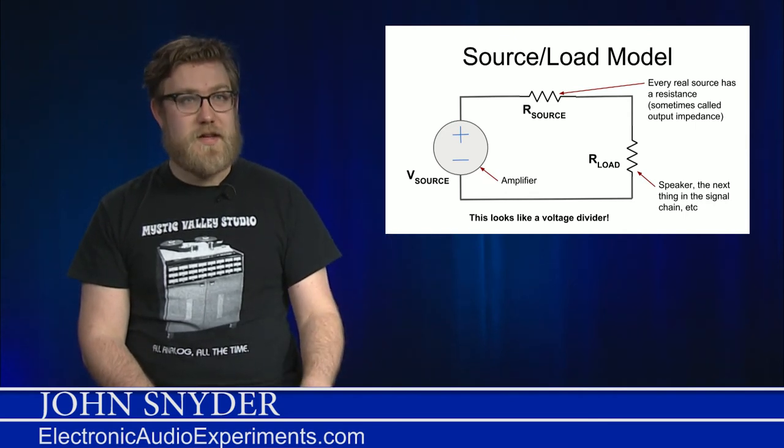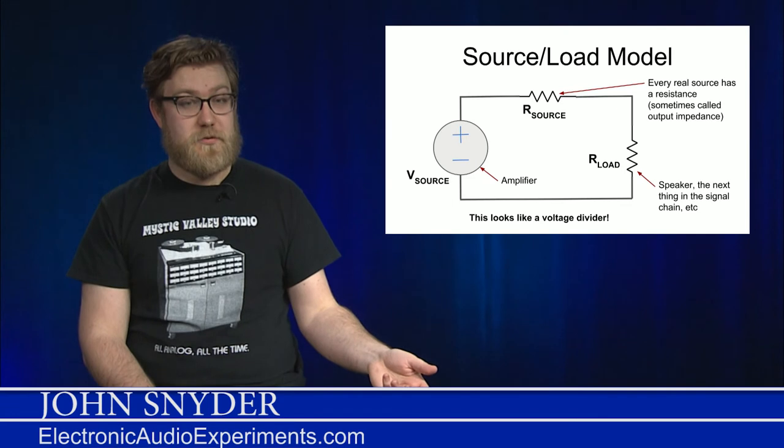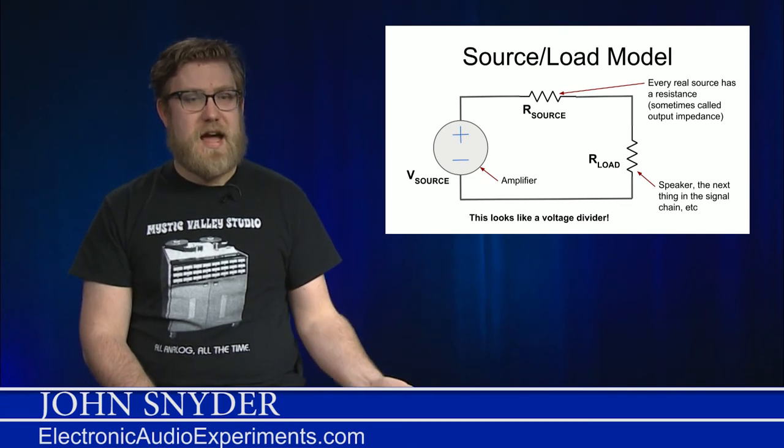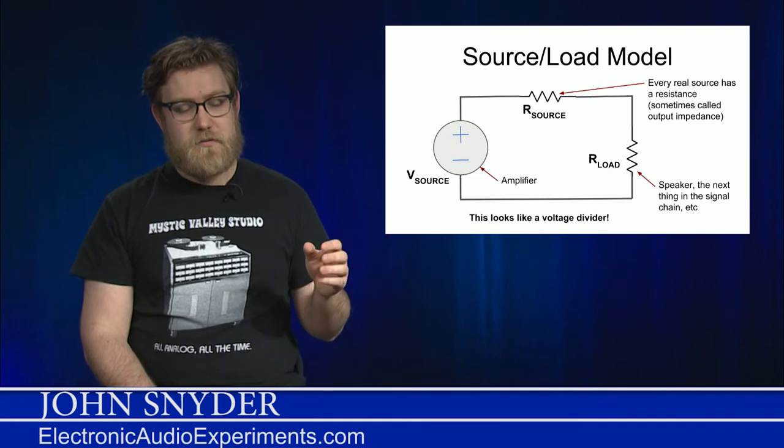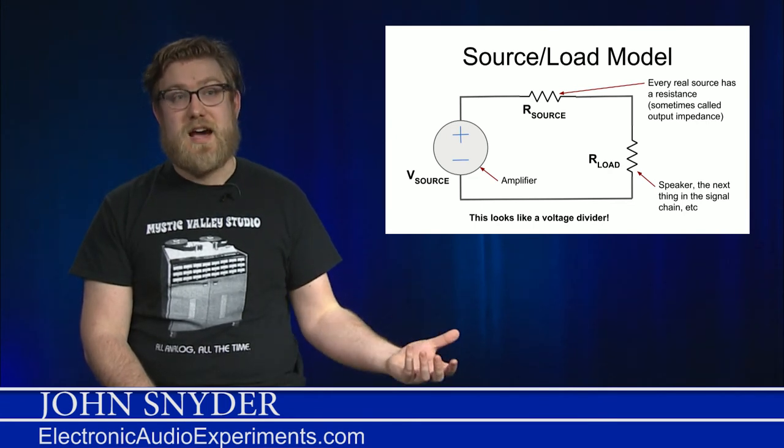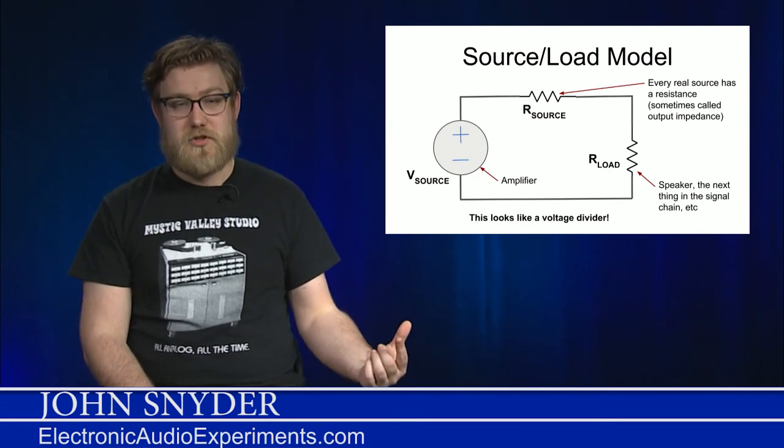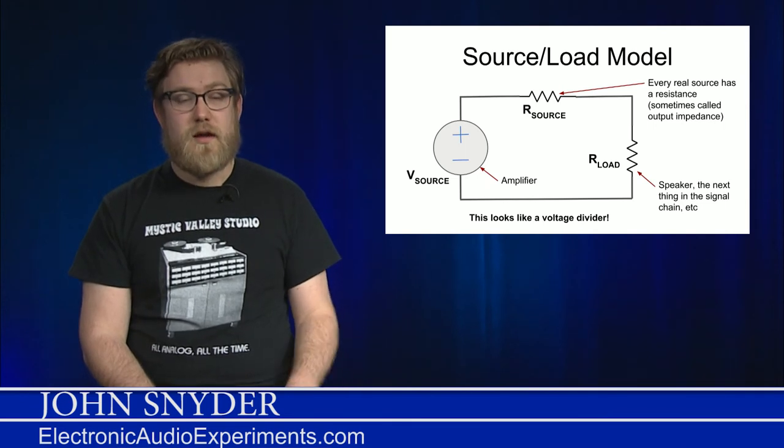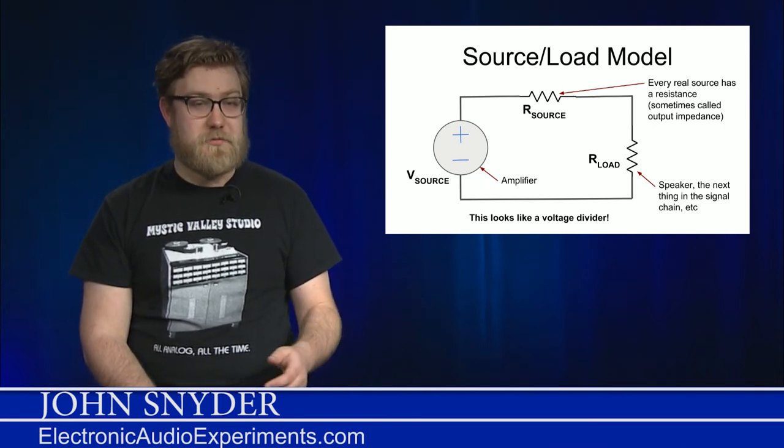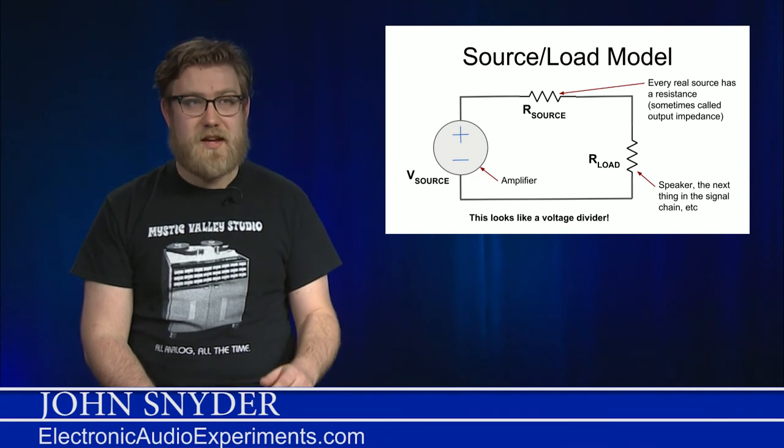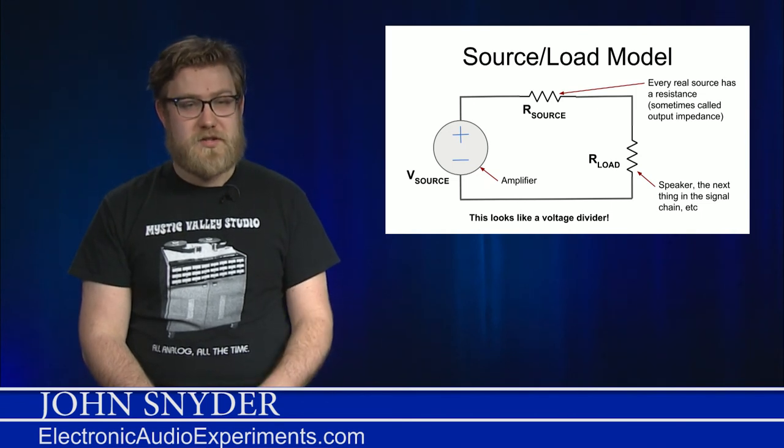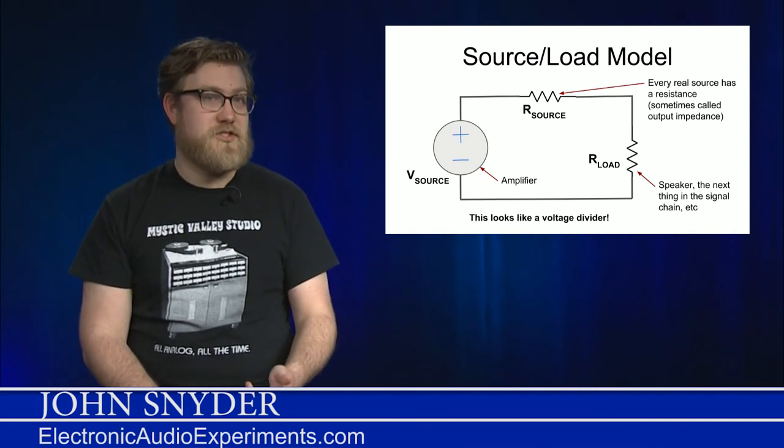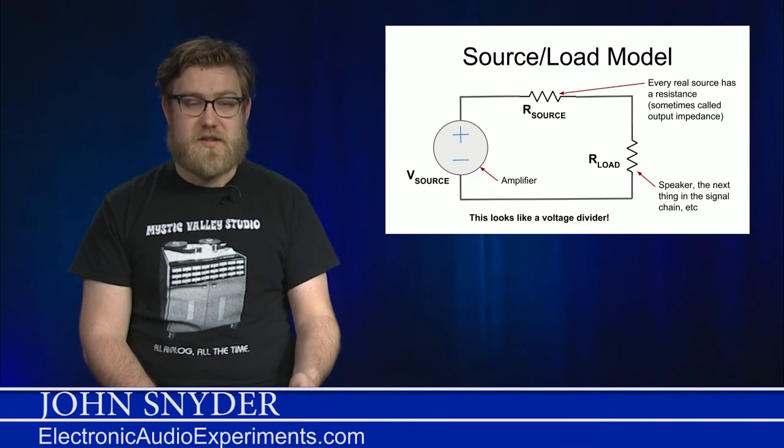With the source load model, you can see we have the voltage of the source represented as just a simple source. And then you have the output resistance of this source. A real source is going to have some output resistance, which is basically showing how much you can actually get out of it. It's like a limit on how much voltage you can get out of it with a given load. And then, of course, we are representing the load as a resistor itself. This can be a speaker, it could be the next thing in your signal chain or something else. The relationship between our source and our load is going to show you how much power and how much signal you get into the next device.